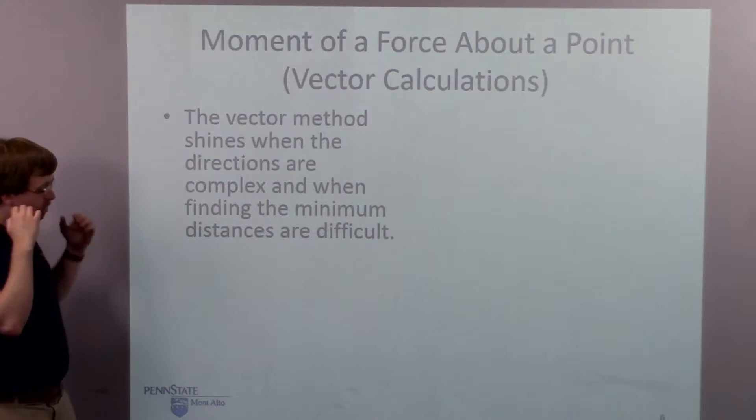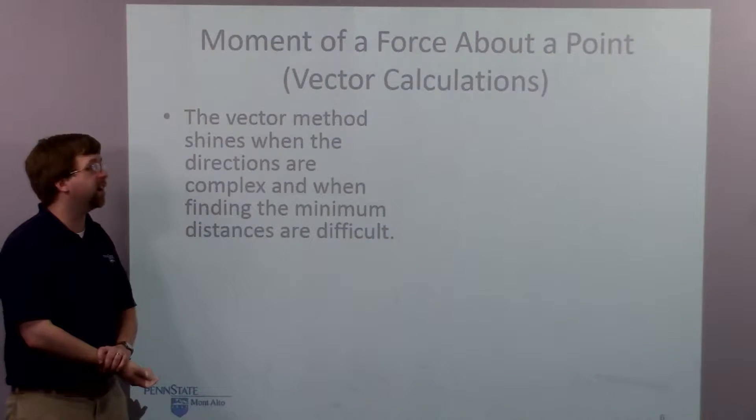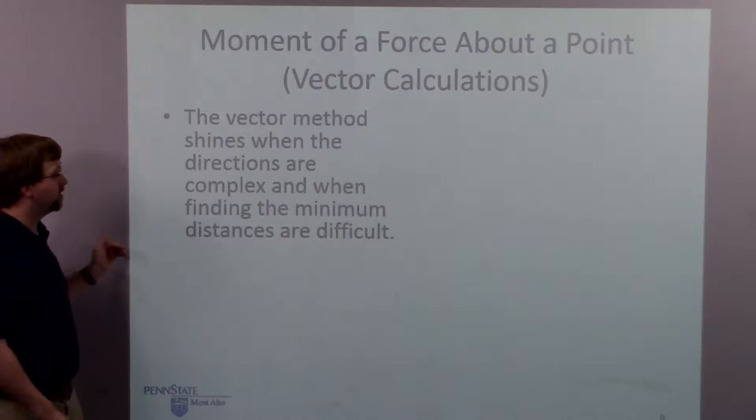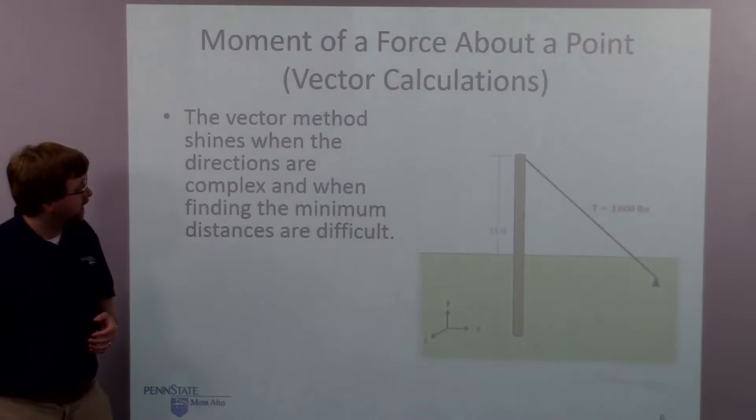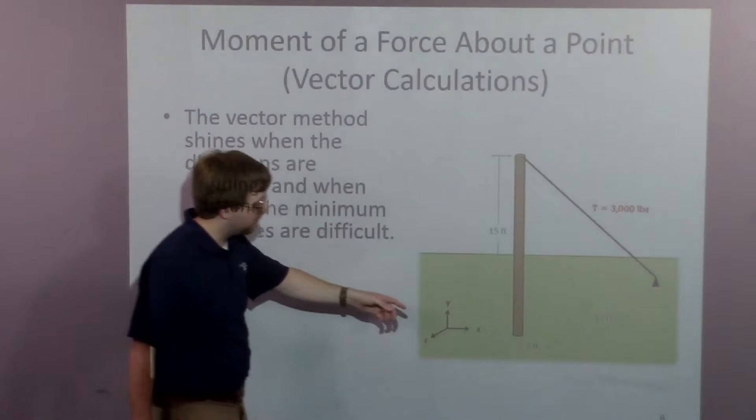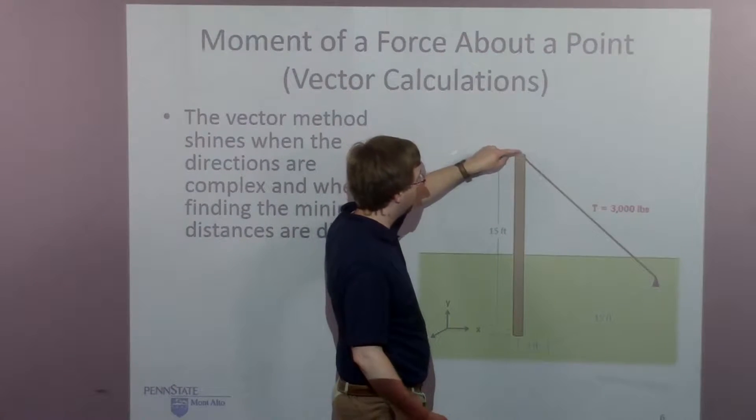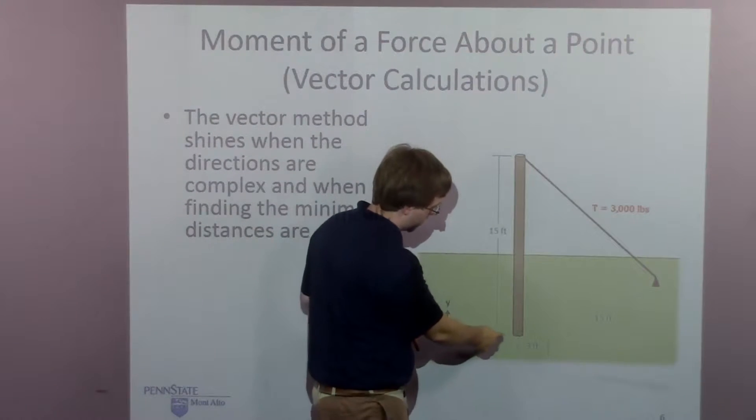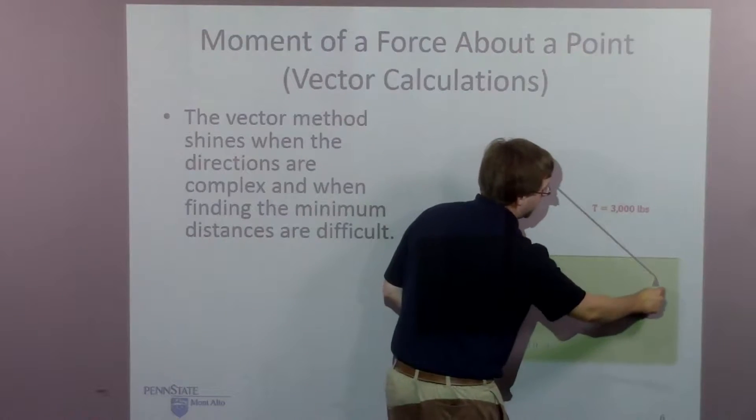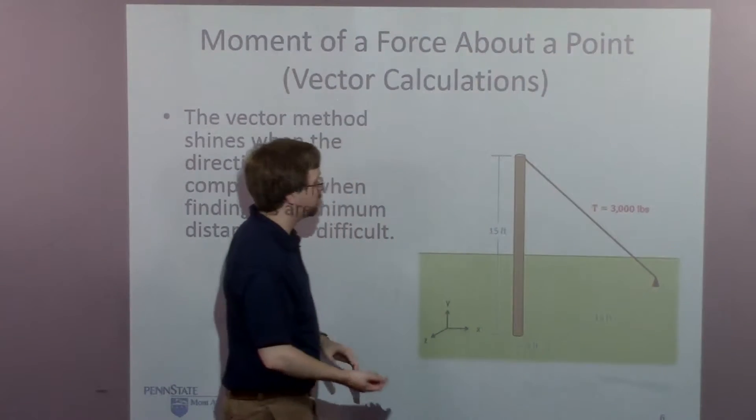So the vector method really shines when the directions are complex and when finding the minimum distance is difficult. So here's a problem, I've got kind of like a telephone pole, it's 15 feet tall. The top of the pole has a tether to the ground. I know it's three feet this way and 15 feet back, and I know the tension in the cable.